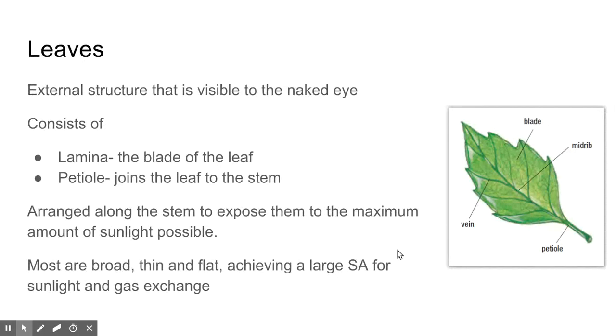The leaves are visible to the naked eye. We can see they have the lamina, which is the blade of the leaf, and then the petiole, which joins the leaf to the stem. The way they're arranged on the stem allows them to expose themselves to maximum sunlight, as light is required for photosynthesis. The best structure for achieving a large surface area for sunlight and gas exchange is if they are broad, thin, and flat.